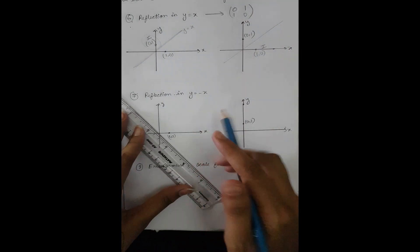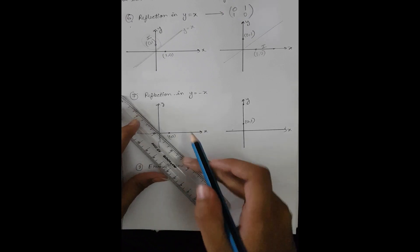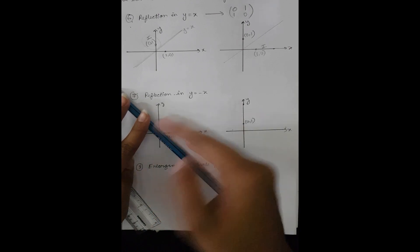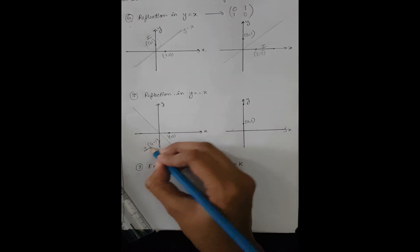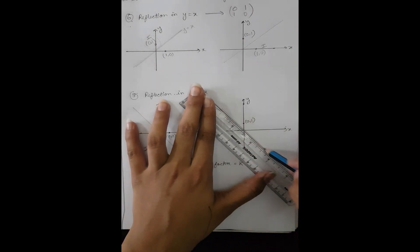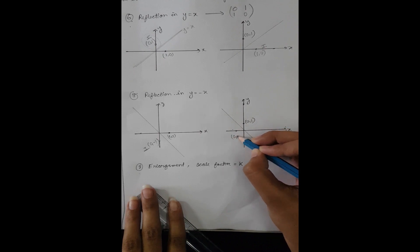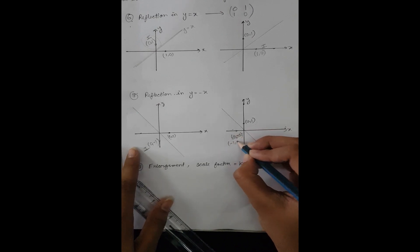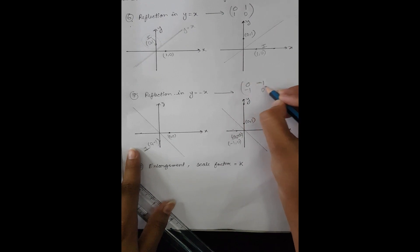Similarly, for reflection in the y = -x line: the point (1, 0) reflected along this line gives an image on the opposite side, which is (0, -1). And reflecting (0, 1) gives (-1, 0). So the matrix is [0, -1; -1, 0].